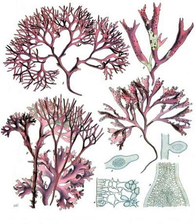Red algae such as dulce, Palmeria palmata, and laver, nori, are a traditional part of European and Asian cuisines and are used to make other products such as agar, carrageenans and other food additives.